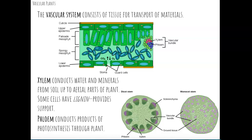Depending on the type of plant, vascular bundles are arranged differently. In dicot plants, there is a lot of ground tissue in the open middle of the plant, with xylem and phloem arranged in a ring around the outside — generally phloem towards the outside and xylem towards the inside. In monocot plants, the vascular bundles are arranged all over the inside of the stem.